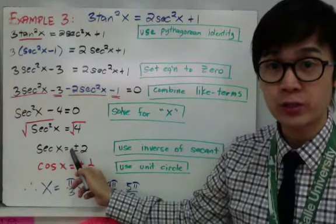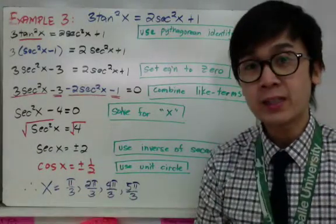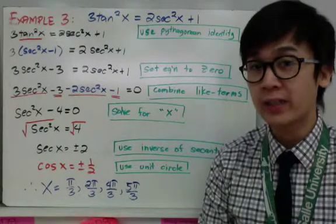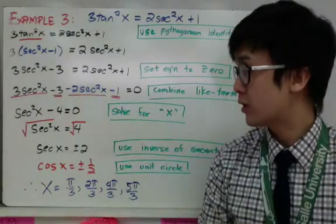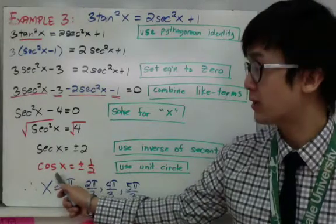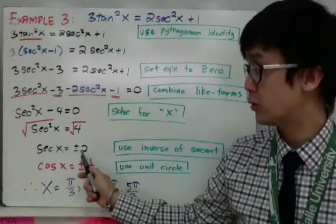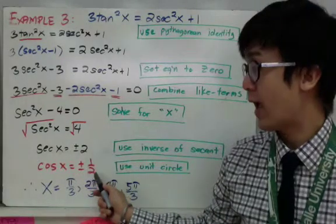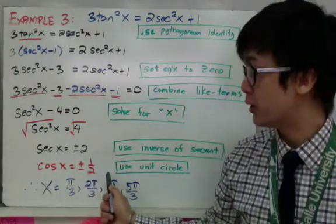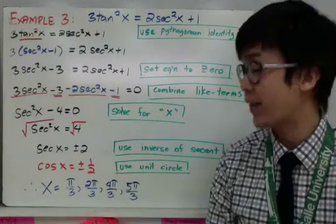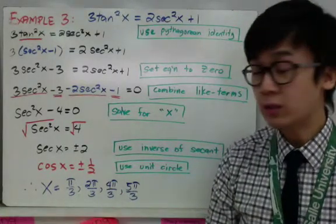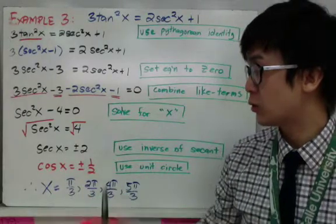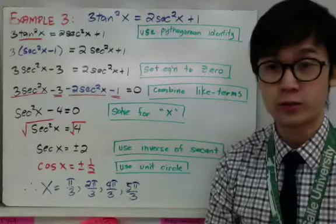Secant is not on the unit circle, so we find its reciprocal, which is cosine. Since secant x is the reciprocal of cosine x, we take the reciprocal of plus or minus two to get plus or minus one half. Using the unit circle to find all values of x, we get four answers: pi over three, two pi over three, four pi over three, and five pi over three.